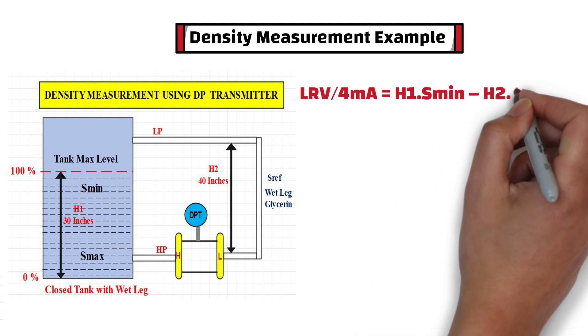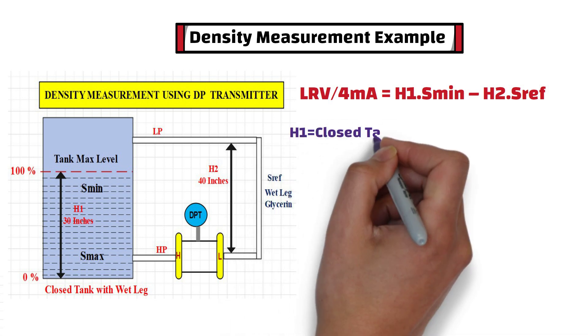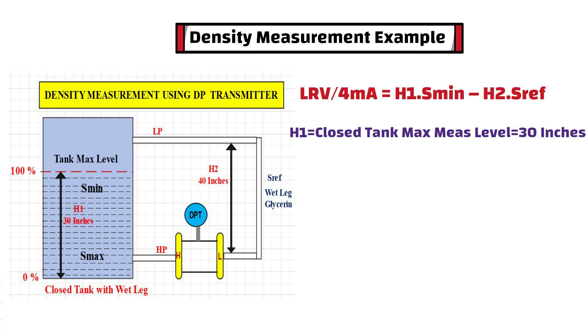This is a standard equation to calculate lower range value of DP transmitter. In this equation, H1 is the closed tank's maximum measured level, which is 30 inches in this example.